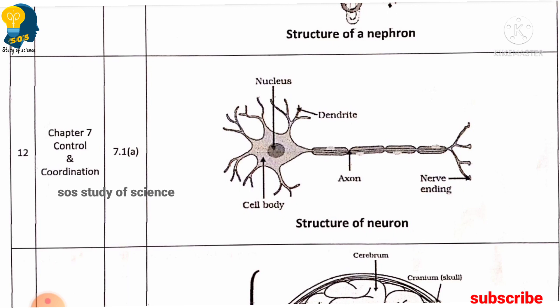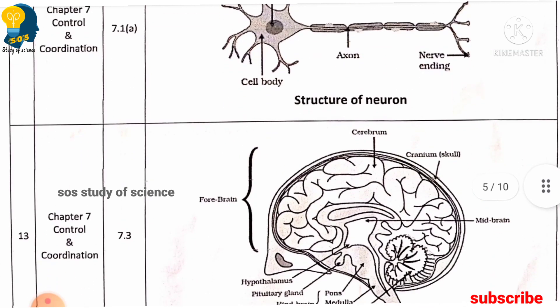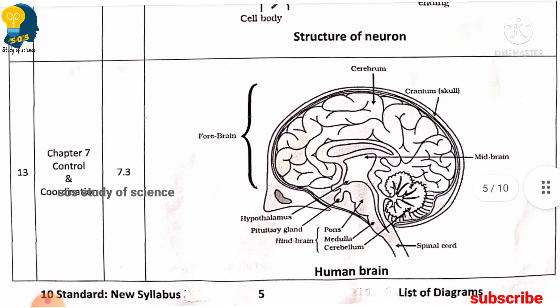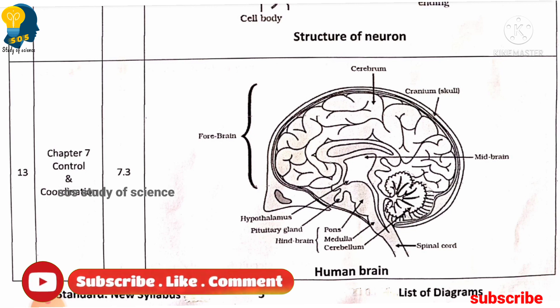Moving to the next lesson — control and coordination — you must learn the structure of a neuron and also the human brain diagram. Human heart and human brain are very very important and you must learn them without fail. Usually every year they ask either human heart or human brain. Learn to write neatly and learn all the parts to label.